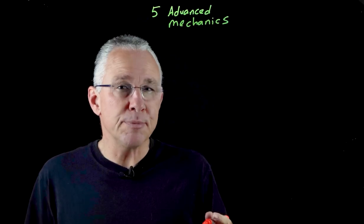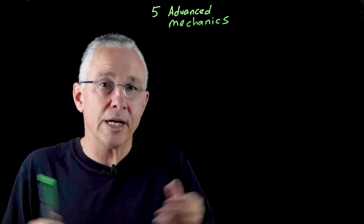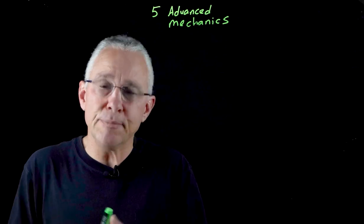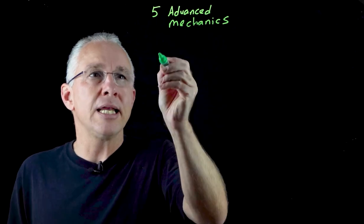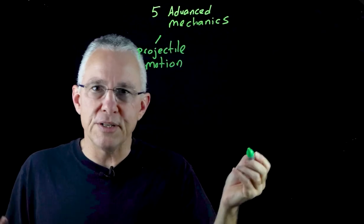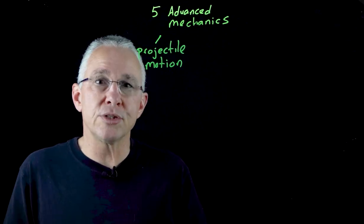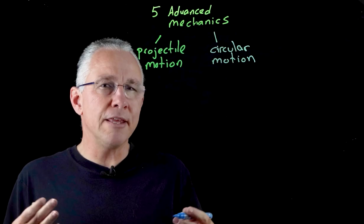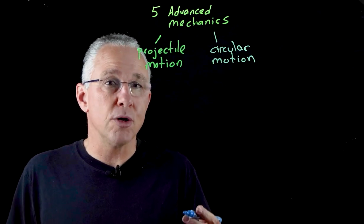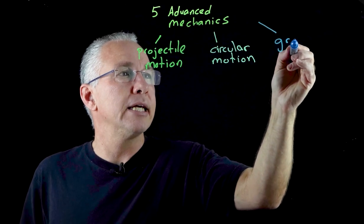Now Module 5 is broken down into three distinct inquiry questions. The first inquiry question is how are models used to explain projectile motion used to analyze and make predictions? I'm going to simplify by simply writing projectile motion. The second inquiry question says why do objects move in circles? And the final inquiry question states how does the force of gravity determine the motion of planets and satellites? And I'm going to simplify it by just simply writing gravity.